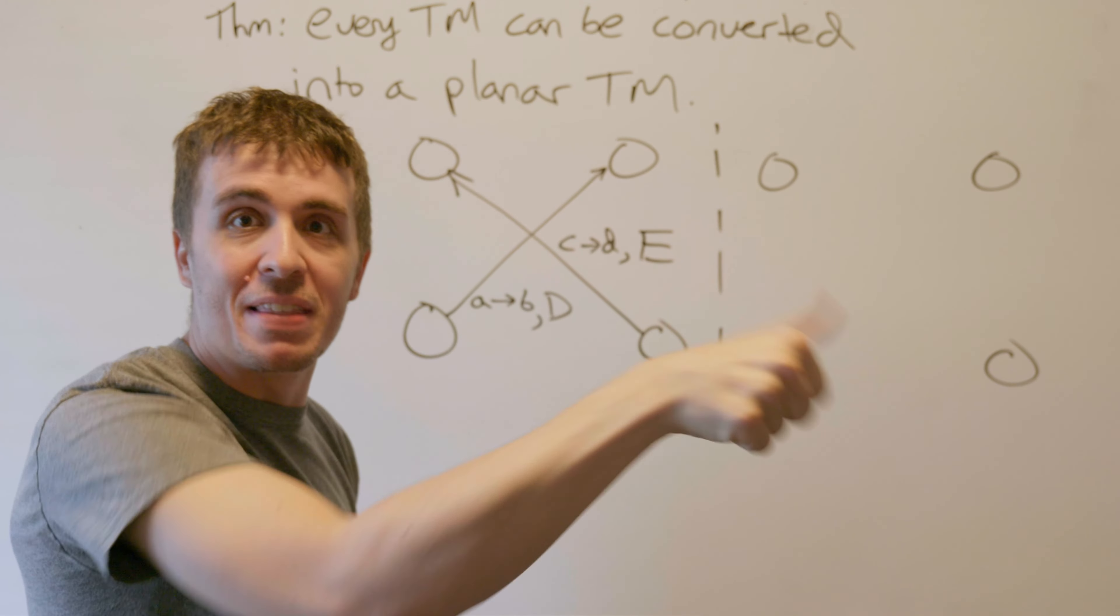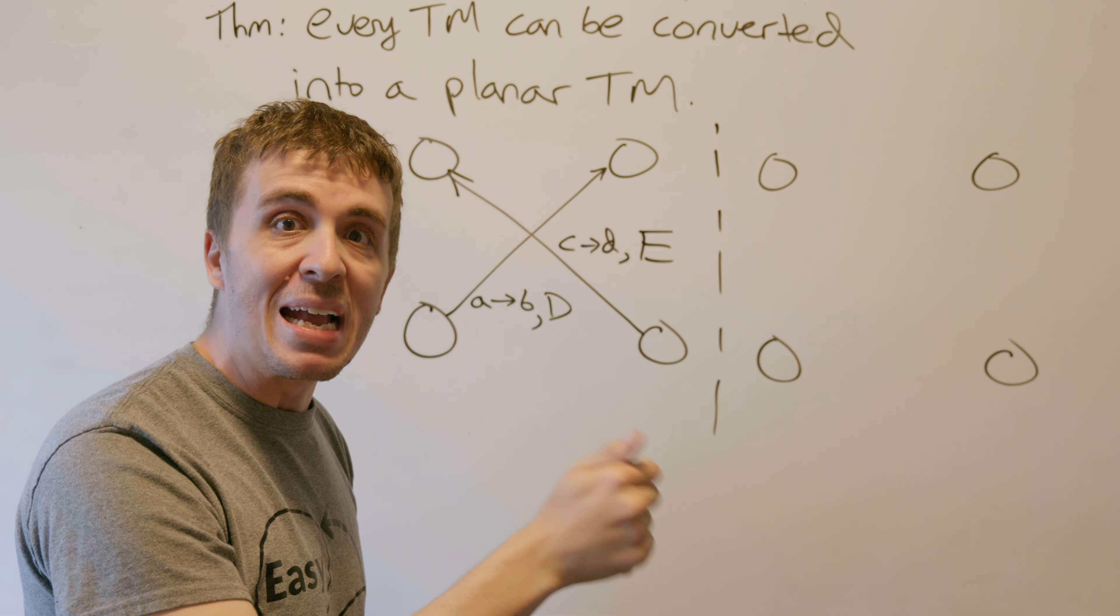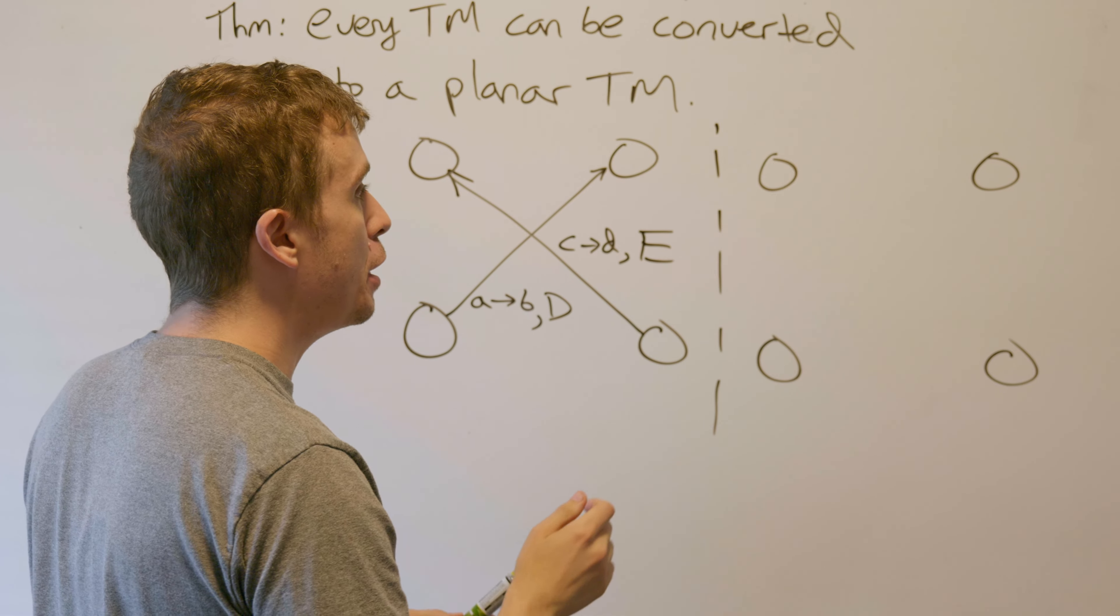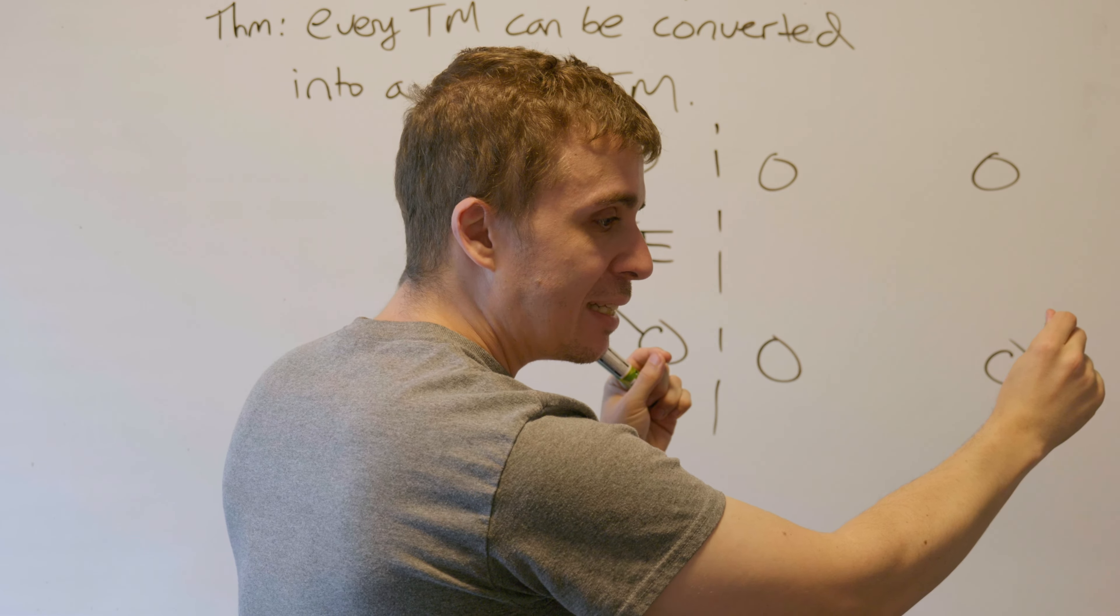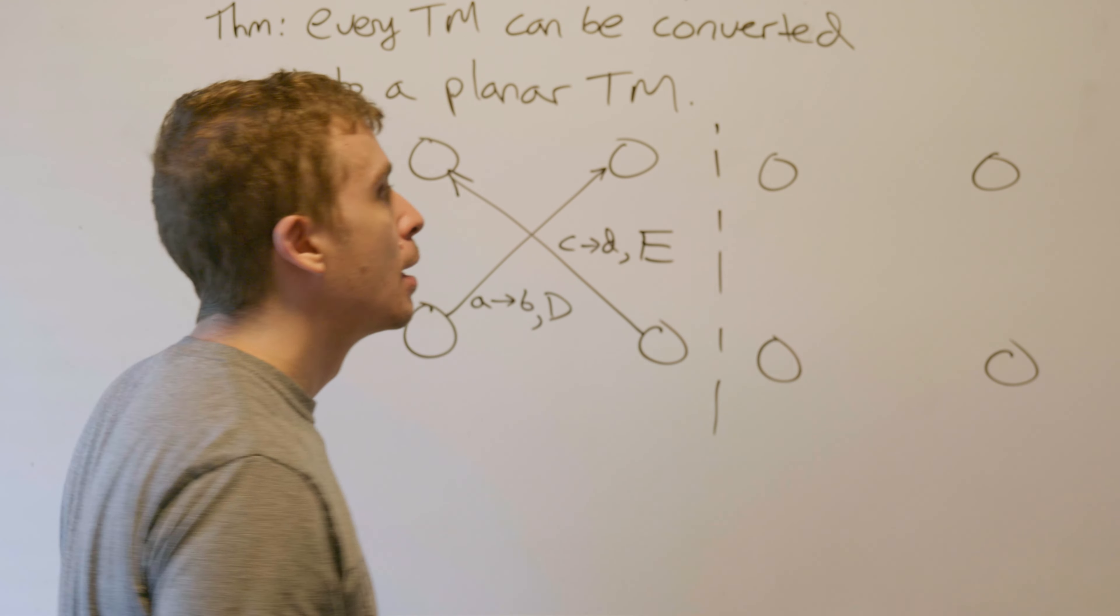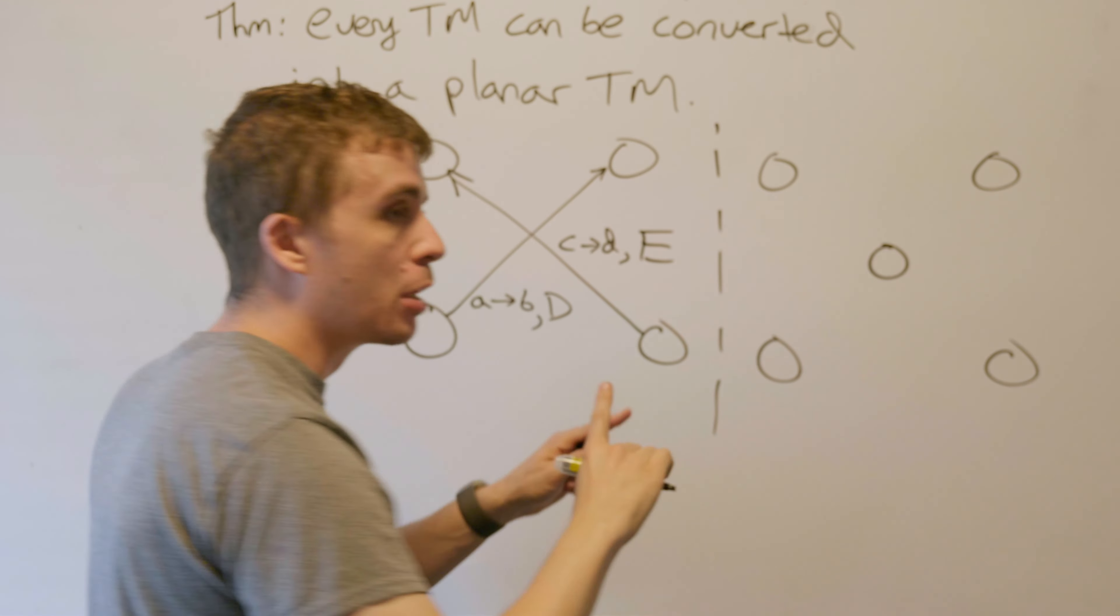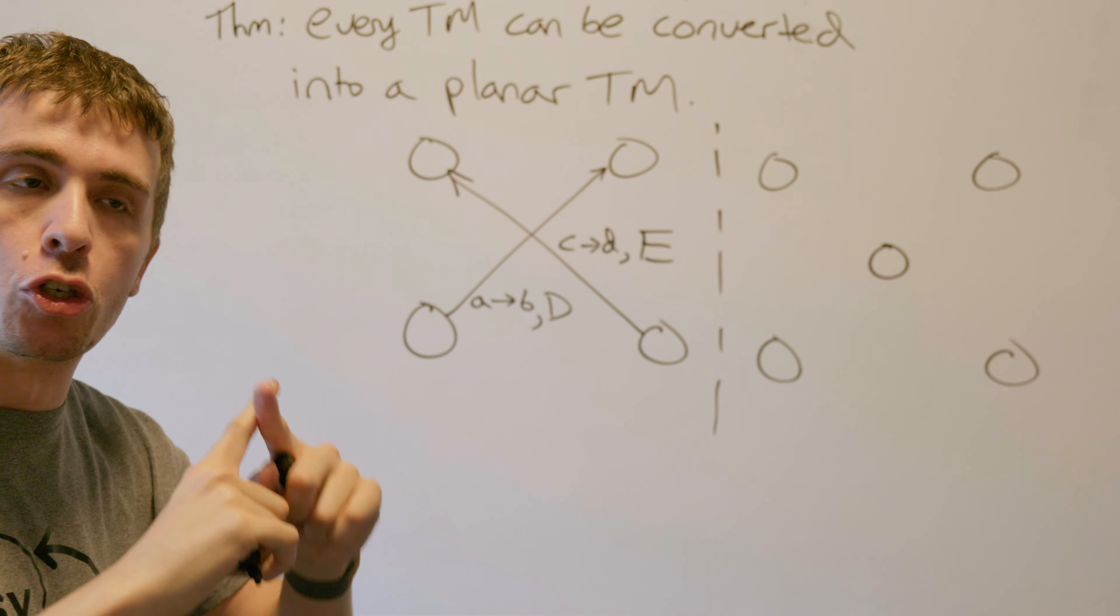You can always move right in the Turing machine. So what we're going to do is we're going to move right and then come back. We're going to have a state in the middle that's going to mediate the intersection here.